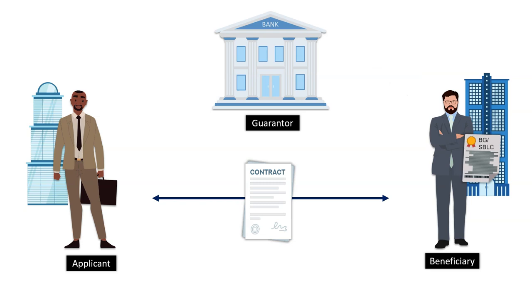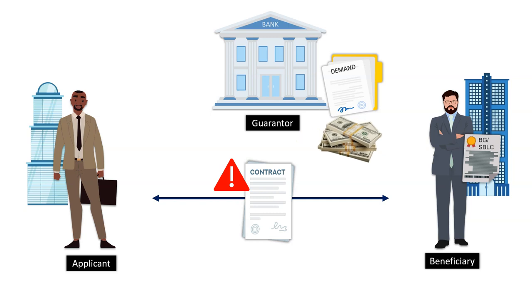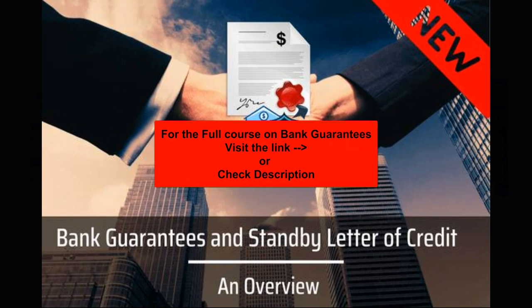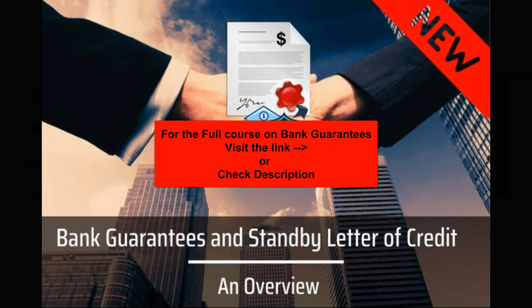Once the guarantor gives the guarantee, he cannot backtrack and withdraw it without the consent of the other parties. In the event that the applicant fails to fulfil his obligation as per the contract — be it repaying money or doing the work assigned — the beneficiary will demand his compensation from the guarantor following the terms of the guarantee, and the guarantor will keep his word and compensate the beneficiary. This is the basic way of working of a guarantee or a standby letter of credit.